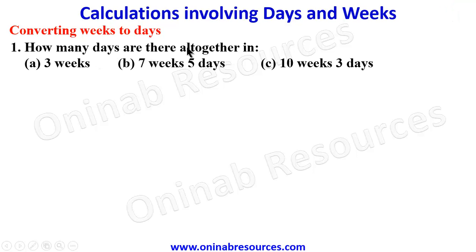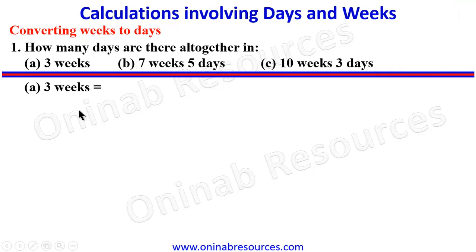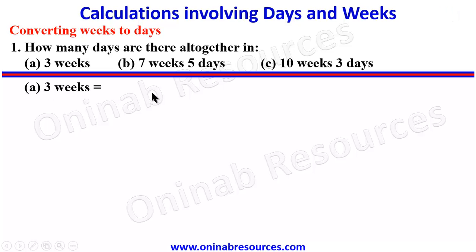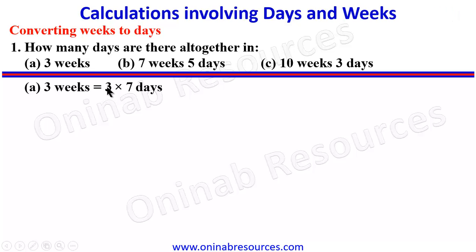Problem 1: How many days are there altogether in A. 3 weeks, B. 7 weeks 5 days, C. 10 weeks 3 days? Starting the solution from A: there are 7 days in a week. Since we have 3 weeks, in order to convert it to days, we multiply 3 by 7 days. And 3 times 7 gives 21 days.